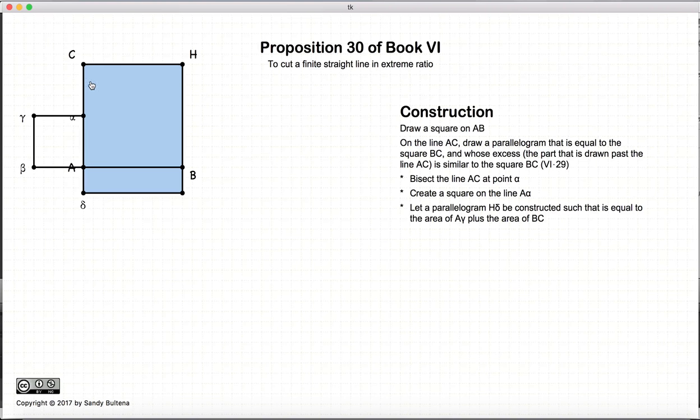Then we draw a shape, doesn't matter what it is, but we draw a shape that is equal in area to CB plus the area that is drawn on half of the line segment, so this area here H delta is equal to CB plus A gamma.